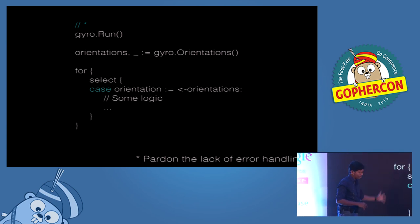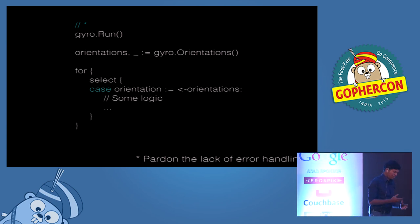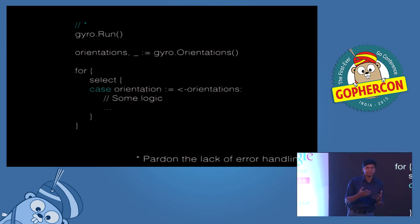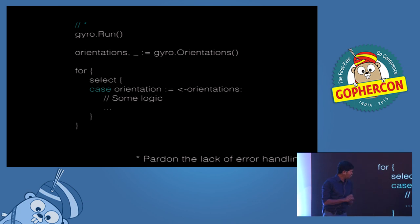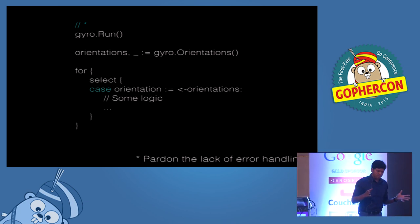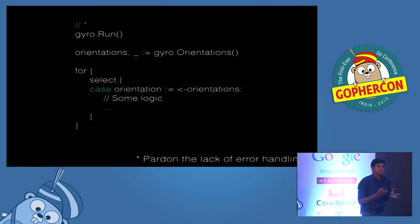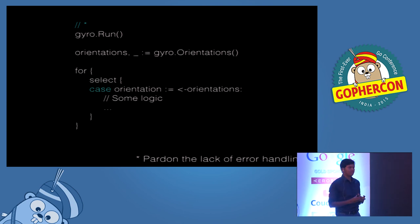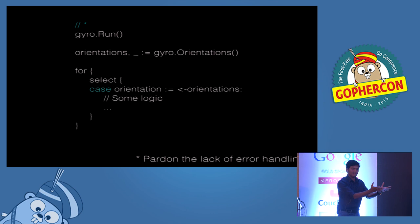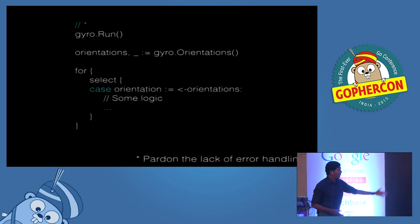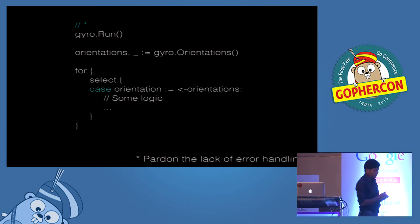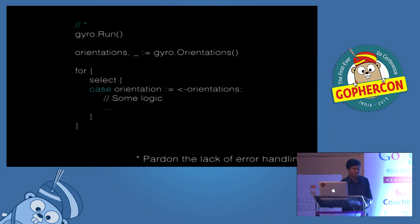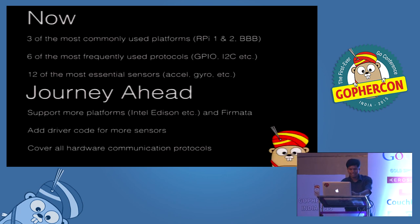Here you use the for-select pattern. A for-select pattern is exactly what I just explained: if a sensor has something to give you, you just execute some block of code which has to happen when the sensor has data. When we were trying to model this, it didn't really take us a lot of time to decide how to do this. Go just literally talked to us: for-select, channels, goroutines. That's how elegant it is — this is a very elegant usage of goroutines and channels. These were just two of the things I used in Embed. I could have talked about much more, but these are my two personal favorites.